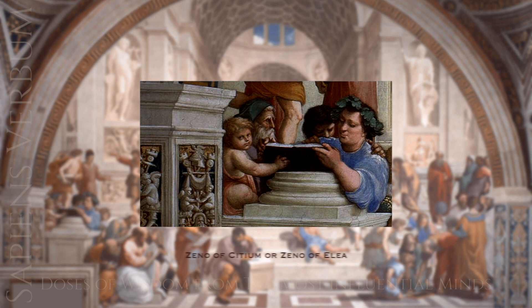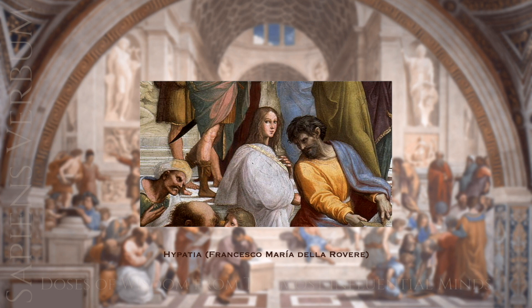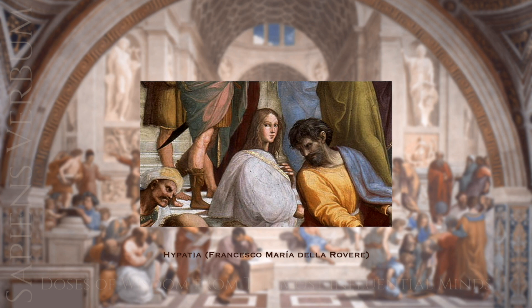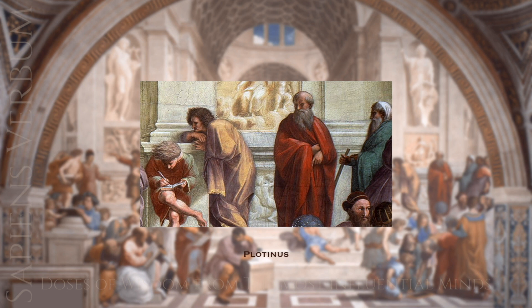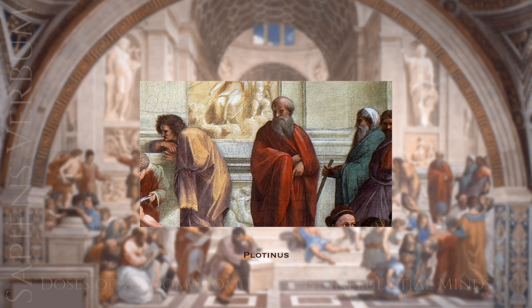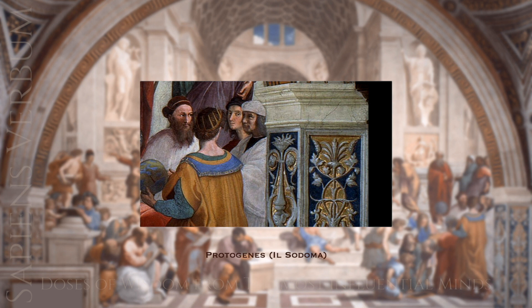Hypatia was a philosopher, mathematician, and astronomer in ancient Alexandria, Egypt, known for her contributions to mathematics — particularly algebra — and for her work on the motion of celestial bodies. She is believed to have been the head of the Neoplatonic school in Alexandria. Plotinus founded the Neoplatonic school of philosophy, believing the highest reality was an ineffable one from which all things emanated. Protogenes was a painter in ancient Greece known for his hyper-realistic paintings, and Il Sodoma was a Renaissance painter known for his use of color and dramatic style.